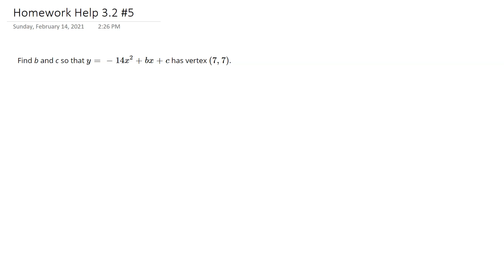For 3.2 number 5, here is an example of the problem that is given. Find b and c so that y equals negative 14x squared plus bx plus c has a vertex at (7, 7).